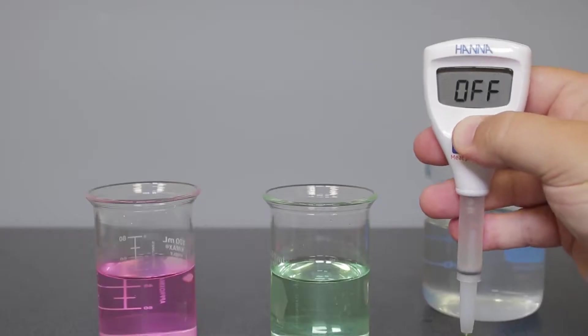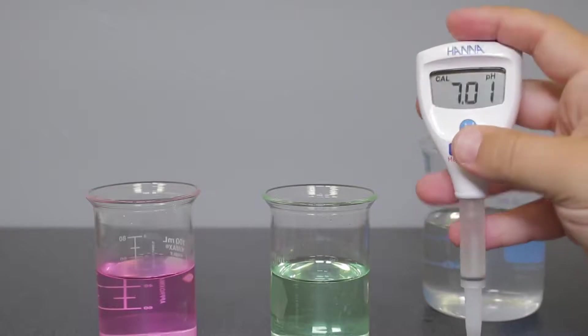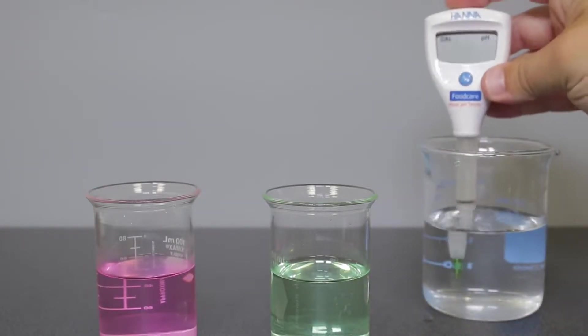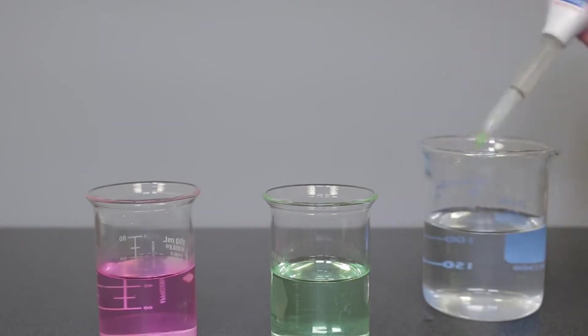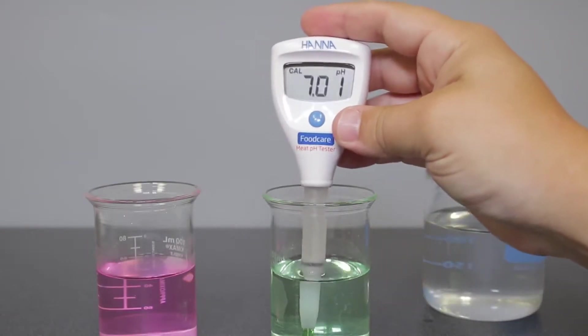To calibrate your tester, press and hold the button for three seconds until cal appears on the screen. Rinse the electrode in deionized water and place the tester in your pH 7.01 buffer and wait for a stable reading.